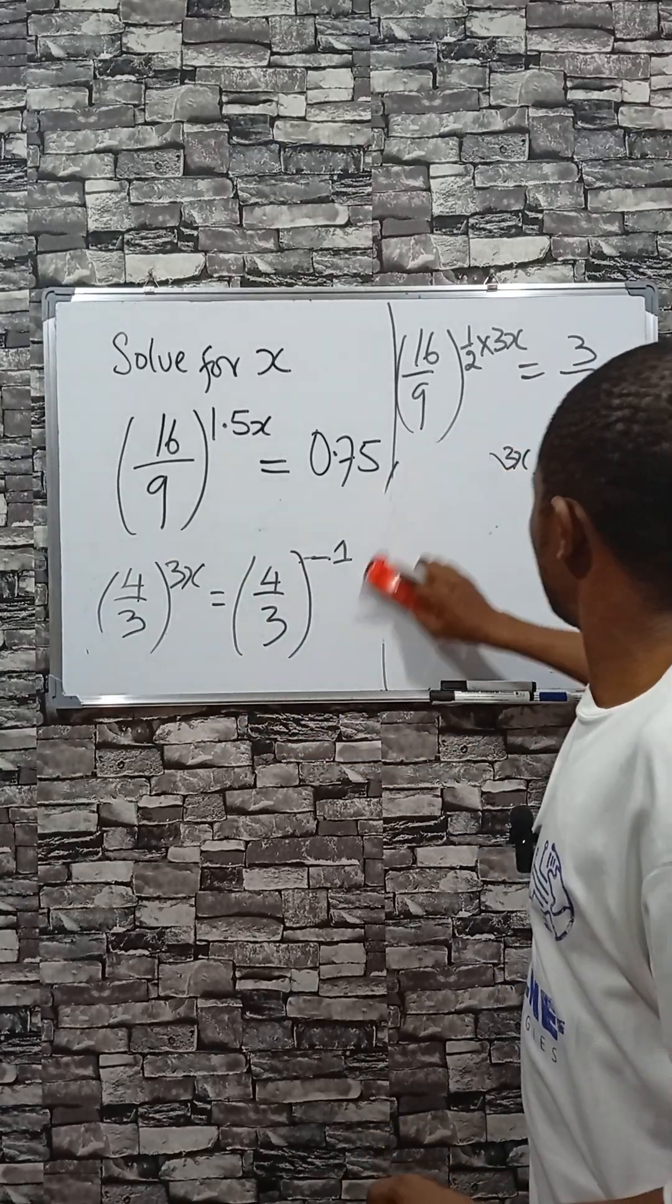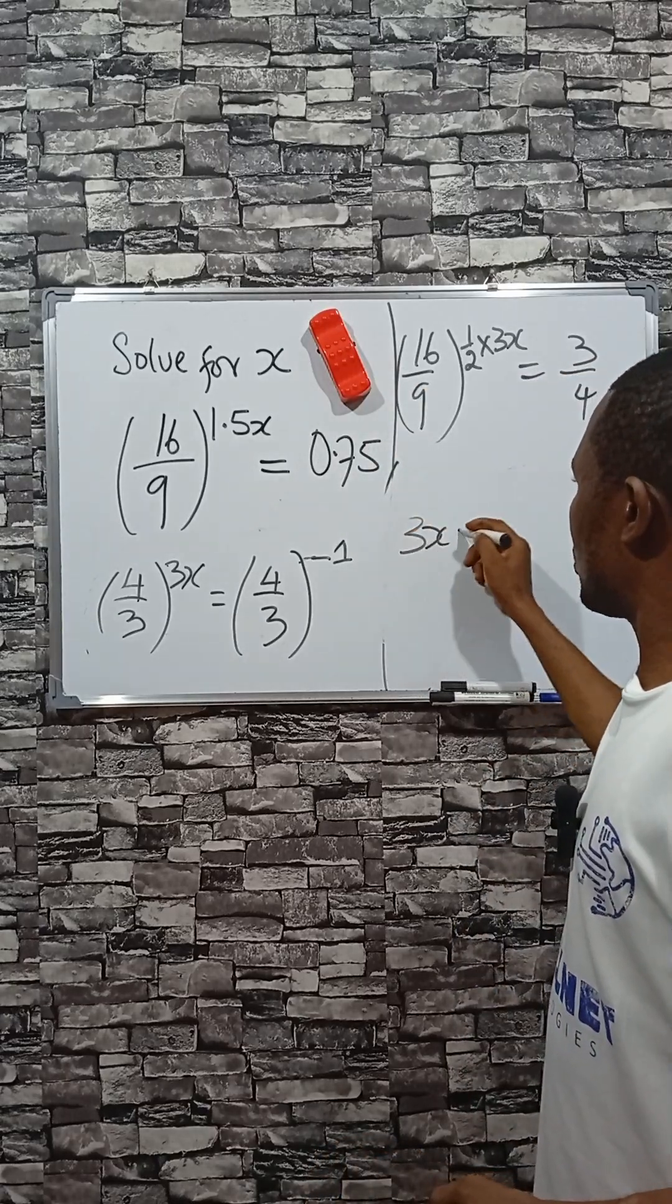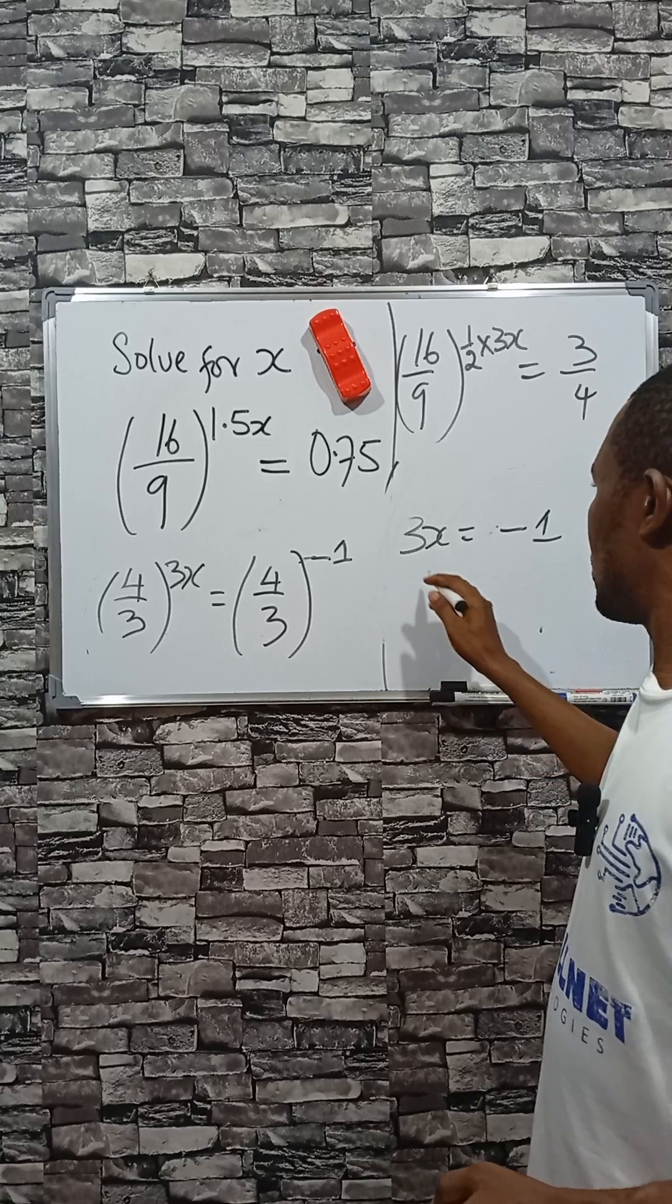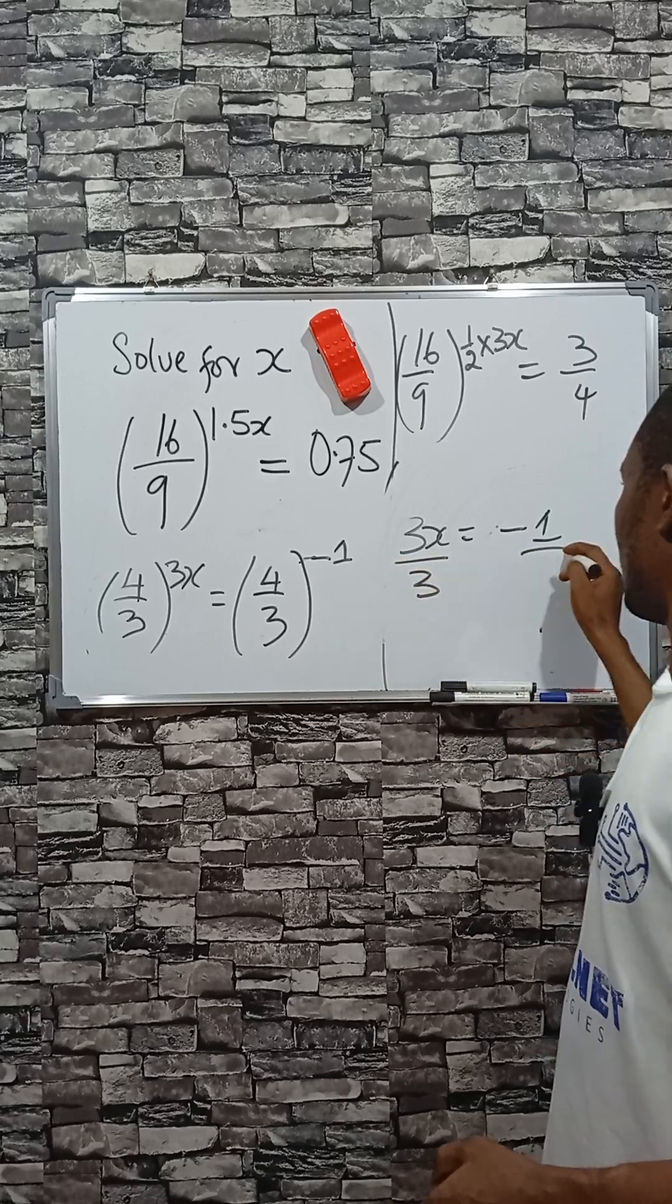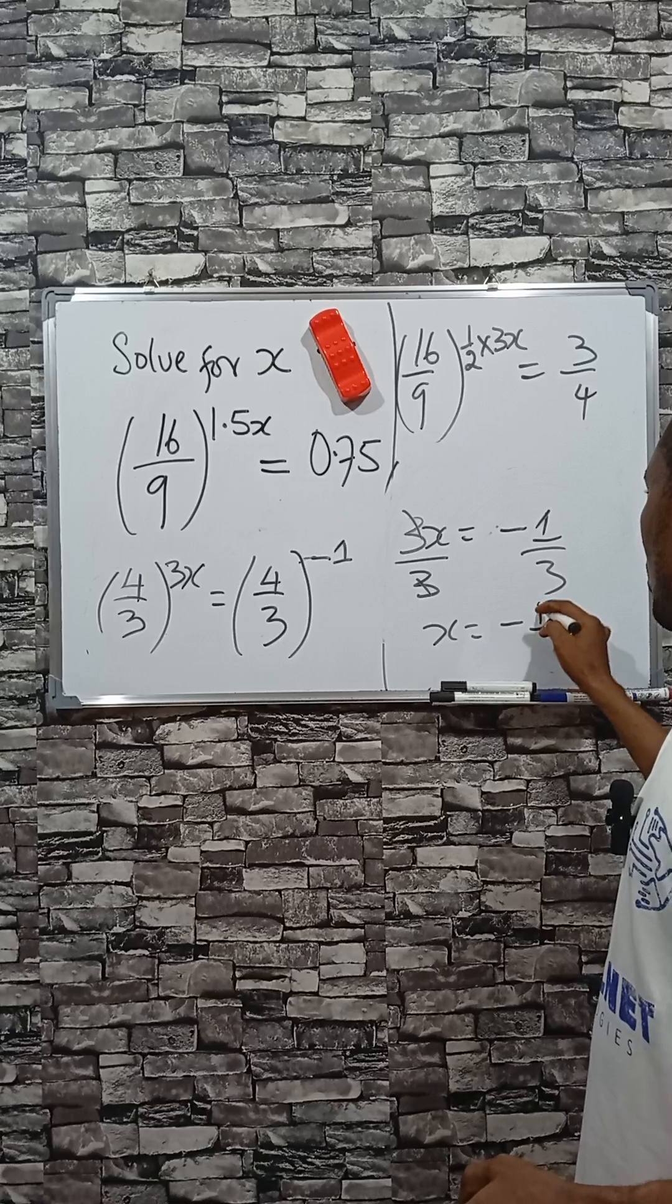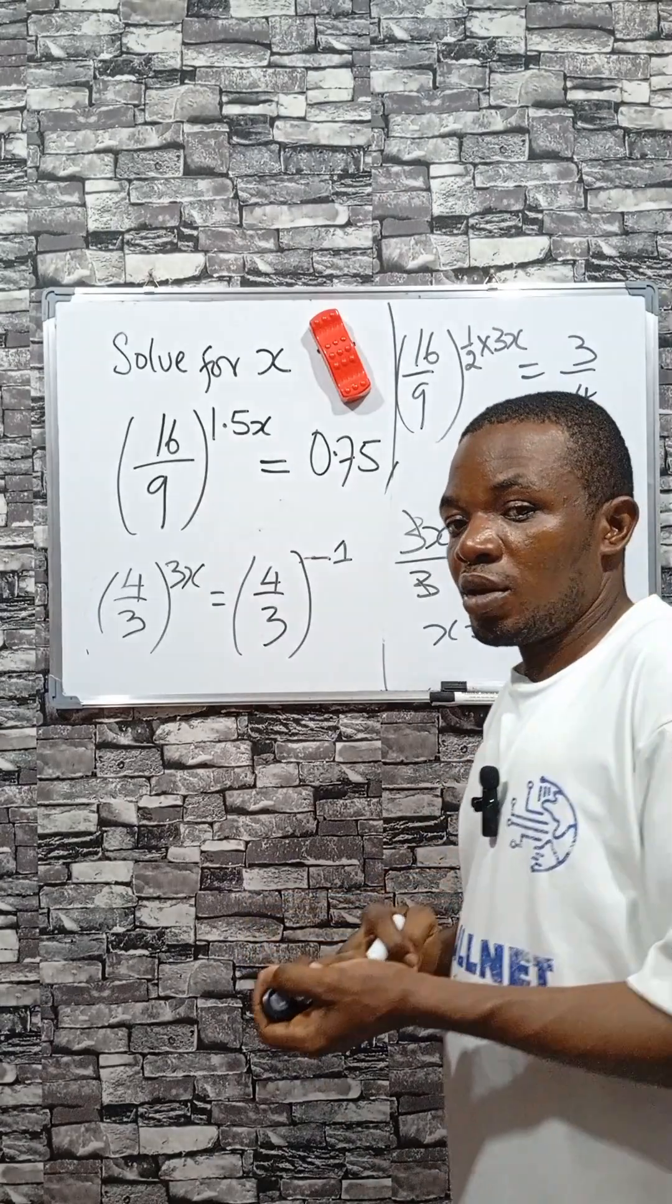Equating the powers, that means that 3x equals -1. Then finding x means you divide by 3. If that happens, x equals -1 over 3. Very simple.